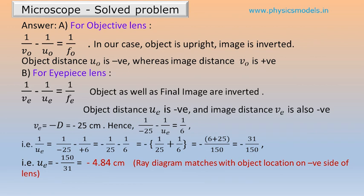We now plug in the general equation for each lens. 1 by V minus 1 by U is equal to 1 by F holds for any convex lens. We put the correct subscript VO, UO and FO for the objective lens. And similarly, VE, UE and FE for the eyepiece lens.